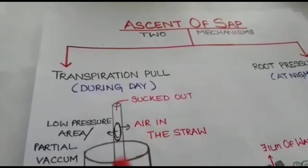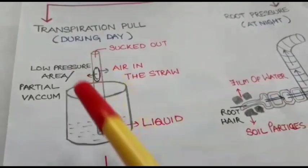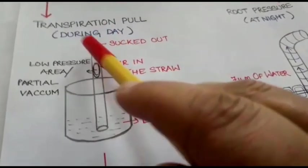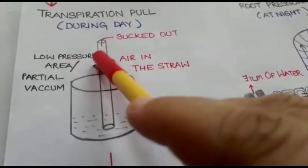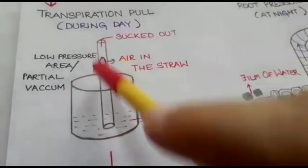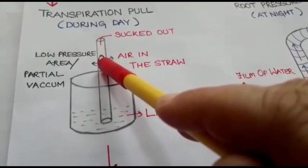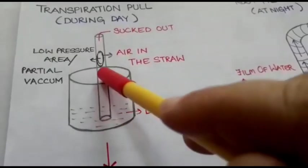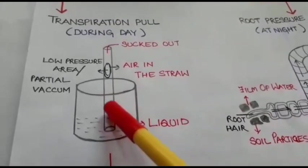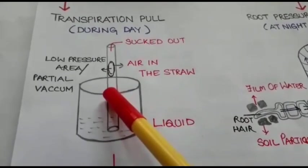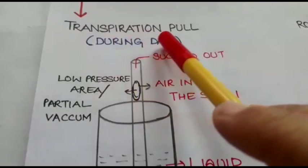Tracheids and vessels form a continuous column from roots to the upper part of the plant body, as the cells are placed one above the other. Because of transpiration from the upper parts of the plant body, a low pressure area is created in the xylem vessels and xylem tracheids. Since this suction pull is created because of transpiration, that is why this mechanism is called transpiration pull.